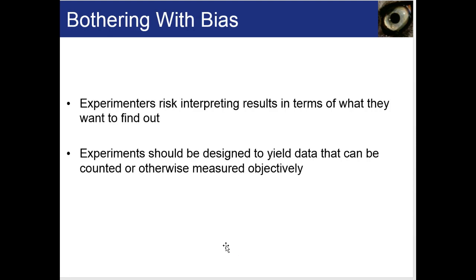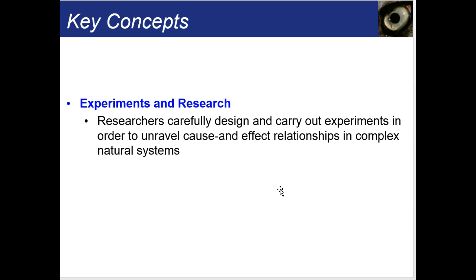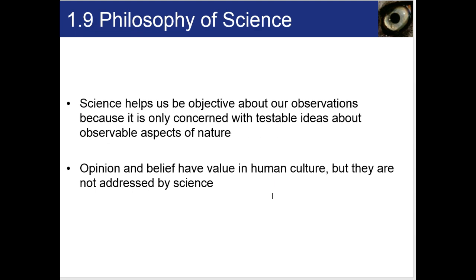Experimenters risk interpreting results in terms of what they want to find. Experiments should be designed to yield data that can be counted or measured objectively — we try to eliminate bias of the person doing the experiment. Quantitative data, or data that includes counting or numbers, helps with that. Researchers carefully design experiments to unravel cause-and-effect relationships in complex natural systems. Science helps us be objective because it's only concerned with testable ideas about observable aspects of nature. Opinion and belief have value in human culture but are not addressed by science.